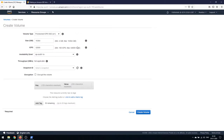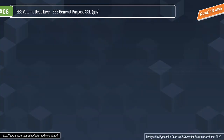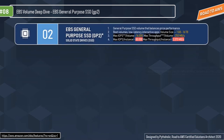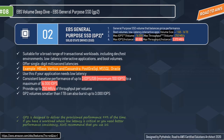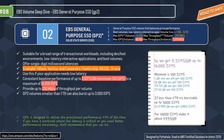The second volume type is General Purpose SSD — GP2 — which is the default EBS volume type for Amazon EC2 instances. It is suitable for a broad range of transactional workloads including dev/test environments, low-latency interactive applications, and boot volumes. It offers single-digit millisecond latencies, a consistent baseline performance of up to 3 IOPS per GB, a minimum of 100 IOPS to a maximum of 16,000 IOPS, and up to 250 MBps of throughput per volume.